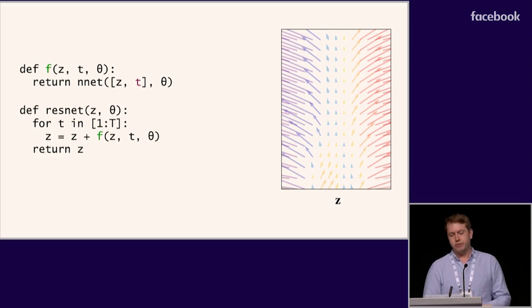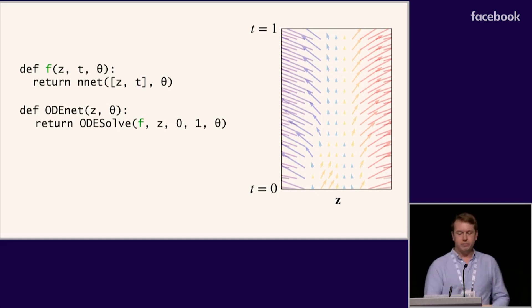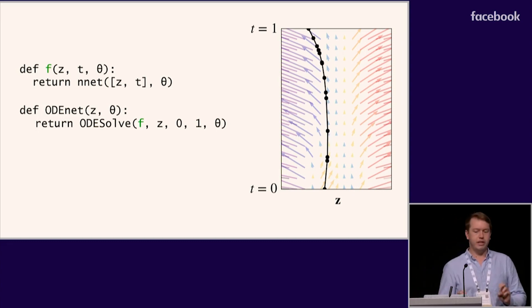However, we're free to replace Euler's method with a more sophisticated adaptive solver. We can replace that entire for-loop with a single call to any ODE solver, running the dynamics from depth T0 to depth T1. This solver is free to evaluate the dynamics network anywhere it wants in order to get the final answer in as few steps as possible. We call this model an ODE net.